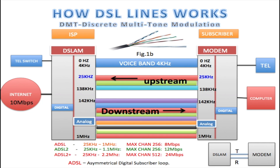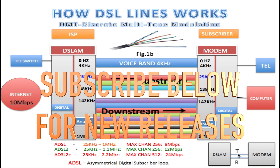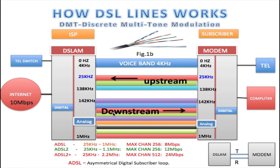Here's an example of the inner workings of a DSL line as it tries to get data from the internet to your computer as quickly as possible. We're going to be talking about DMT — Discrete Multi-Tone Modulation. This is a carrier signal sent from the DSLAM to the modem over our copper wires, or tip and ring, running between the DSLAM and the modem. This is what it looks like.